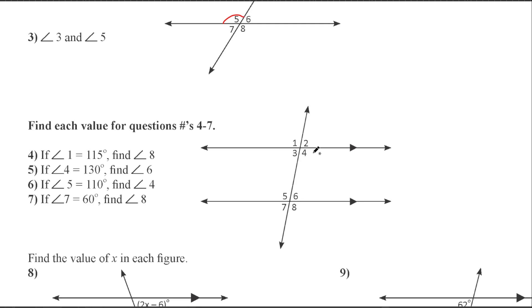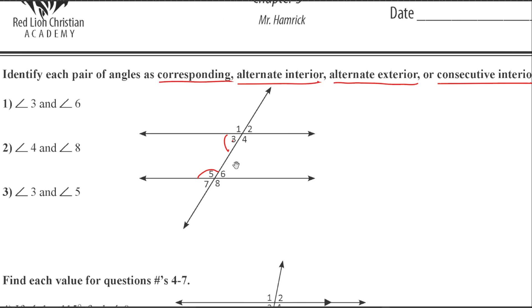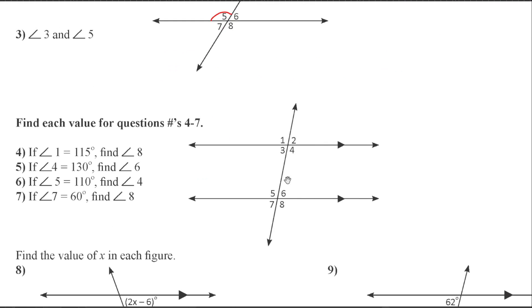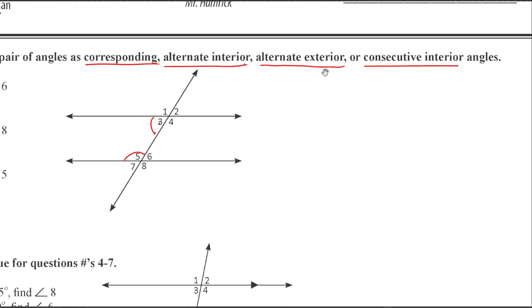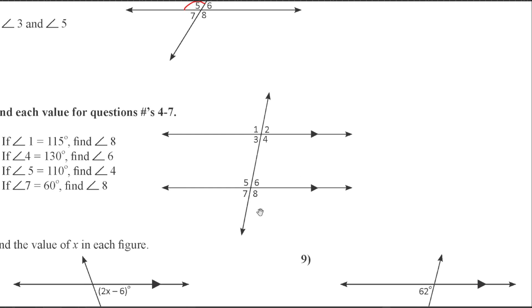What else is equal? All the alternate interior angles are equal to each other. So three and six are equal — if I know three, I know six. And four and five are also alternate interior, so four and five equal each other. That doesn't mean three and four are equal to each other. What about alternate exterior angles? One and eight — they're also equal to each other. And two and seven are alternate exterior, so they're equal to each other as well.